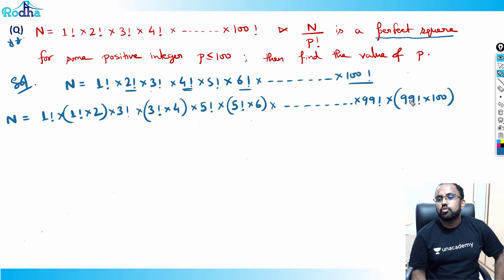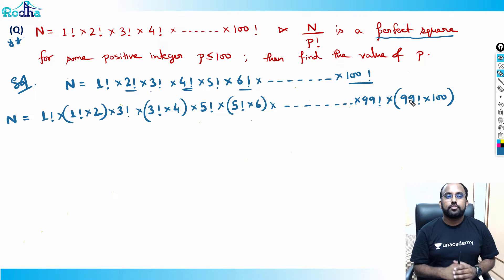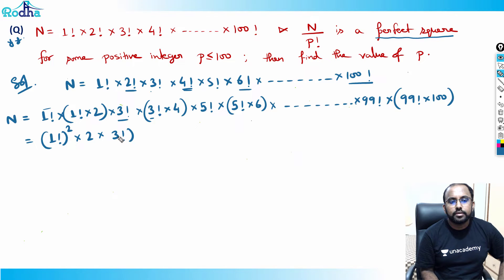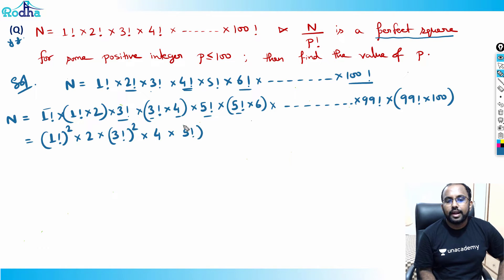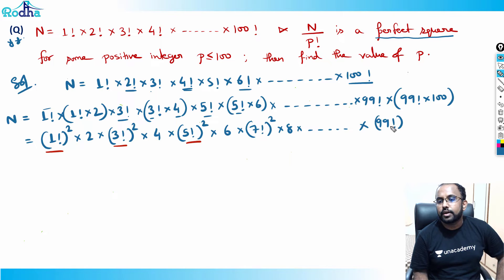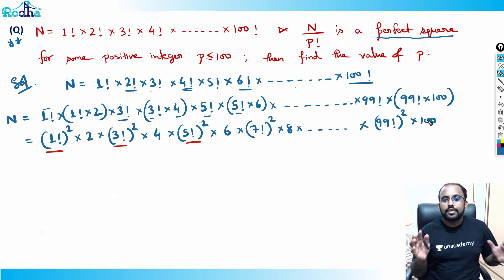Why this pattern? Because we want to make it into a perfect square. We can see: 1 factorial into 1 factorial becomes 1 factorial squared. Then 2 is left out. Then 3 factorial into 3 factorial becomes 3 factorial squared, and 4 is left out. Then 5 factorial squared and 6 is left out. This goes on — all odd-numbered factorials squared — 1 factorial squared, 3 factorial squared, 5 factorial squared, continuing till the last odd number 99, giving 99 factorial squared into 100.